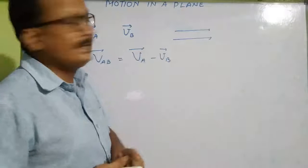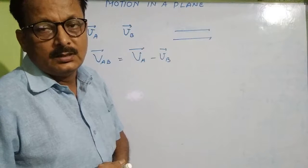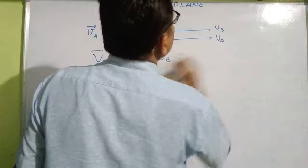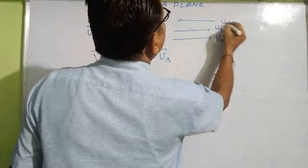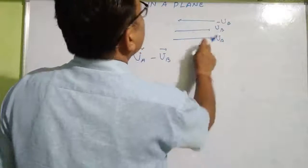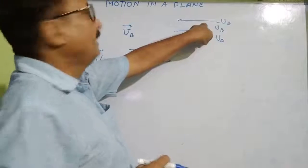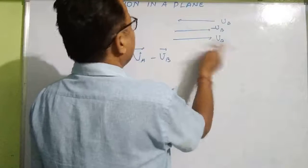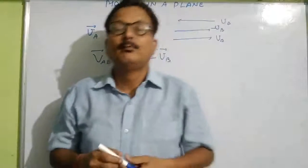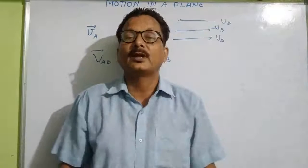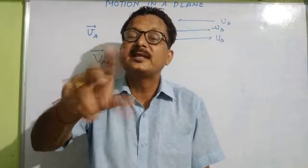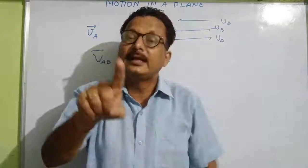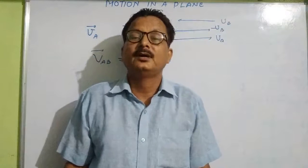If both objects are moving in the same direction, then the relative velocity will be VA minus VB — that is, the difference of their velocities. And if they are moving in opposite directions, then the relative velocity was the sum of the velocities of the two objects.